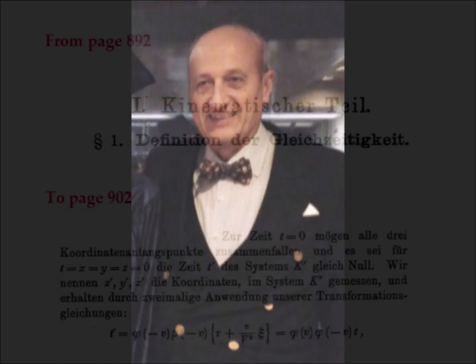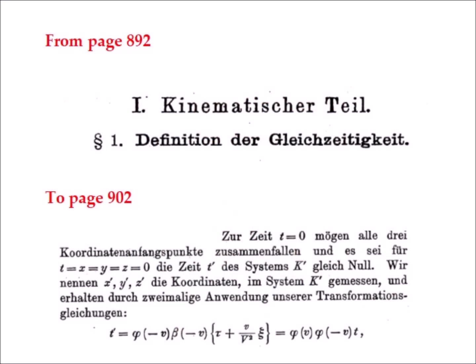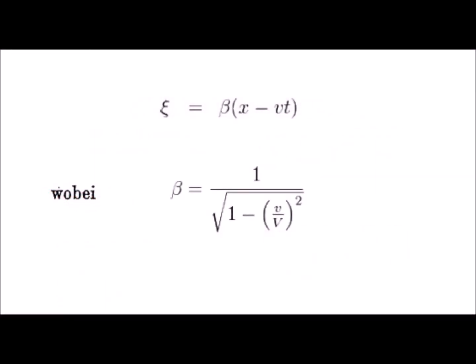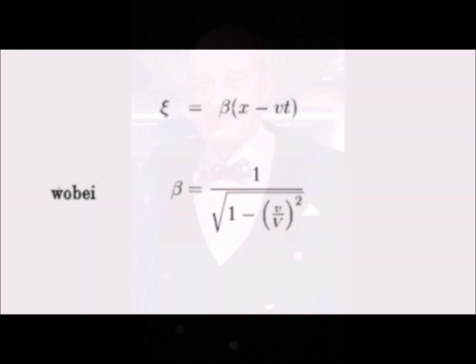It can be noticed that the long developments of the beginning of this article on time and simultaneity are without object, since only the contraction of the lengths of the Lorentz formulas is used in paragraph 6, which deals precisely with the object of the article.